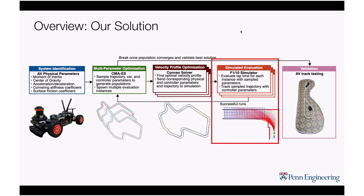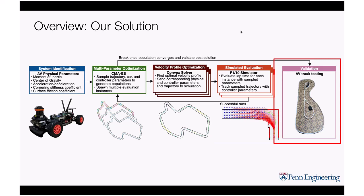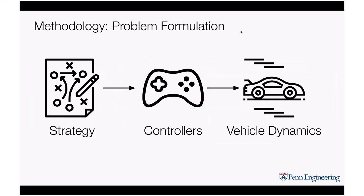Once in the simulator, we evaluate the lap time for each instance by tracking the sample trajectory with the controller parameters. Each generation runs multiple simulations in parallel, and the multi-parameter optimization collects all results. We iterate over multiple generations until the lap time or covariance converges to a good solution, then we take that solution and put it on a real car on a real track for validation.